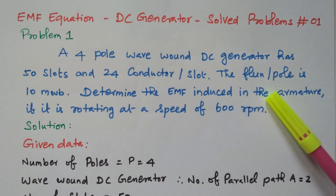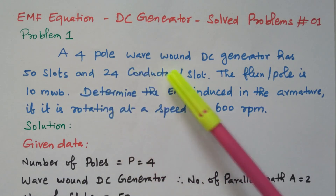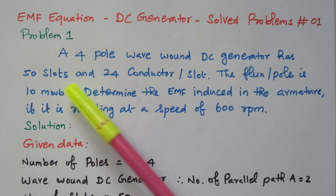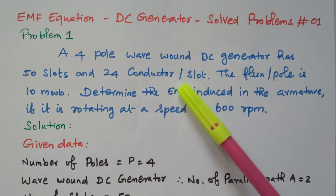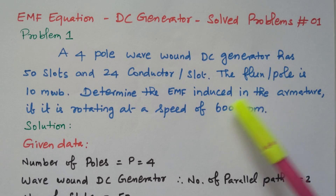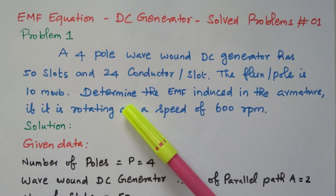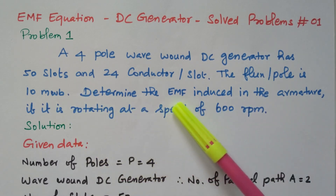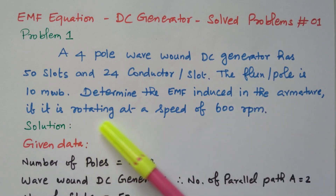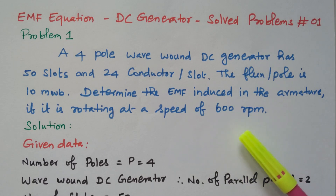Now we will go to the problem. A four-pole wave wound DC generator has 50 slots and 24 conductors per slot. The flux per pole is 10 milli Weber. Determine the EMF induced in the armature if it is rotating at a speed of 600 RPM.